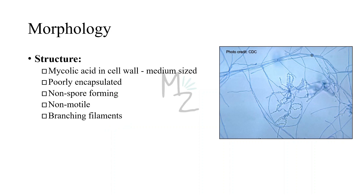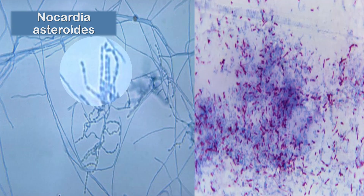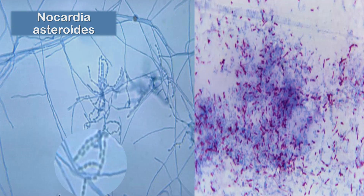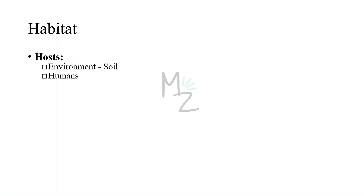It forms branching filaments, as you can see in this picture. On the right side it is rod-shaped and thin, and on the left side you can see the filaments — it looks like beads in a string.